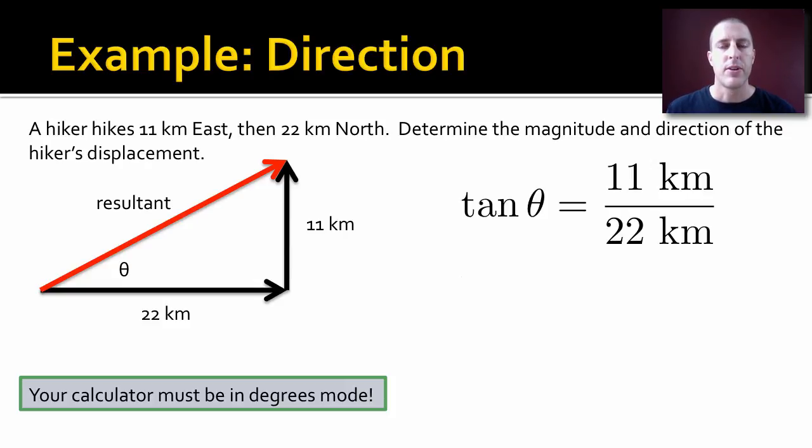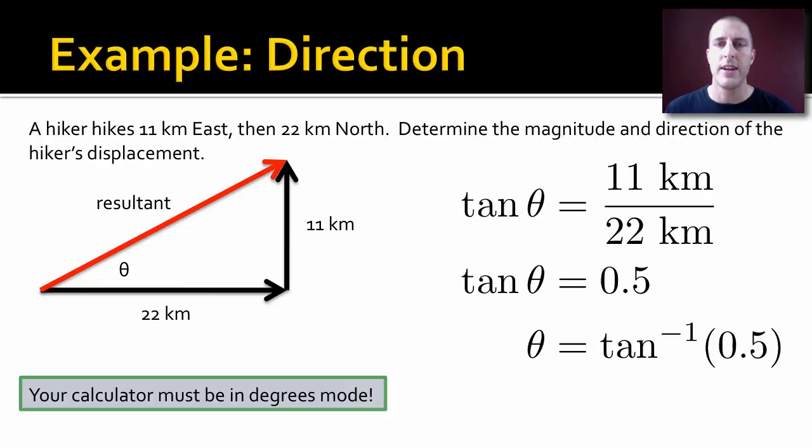We have tangent as opposite over adjacent, which will be 11 kilometers over 22 kilometers. We figure out what that is, and then to undo tangent, we have tangent theta equals 0.5. To undo tangent, we have to use inverse tangent. On your calculator, that will be the tan to the minus one button. We do tan minus one of 0.5, and that will give us our angle, which in this case is 26.57 degrees. Make sure your calculator is in degrees mode or it won't look right.